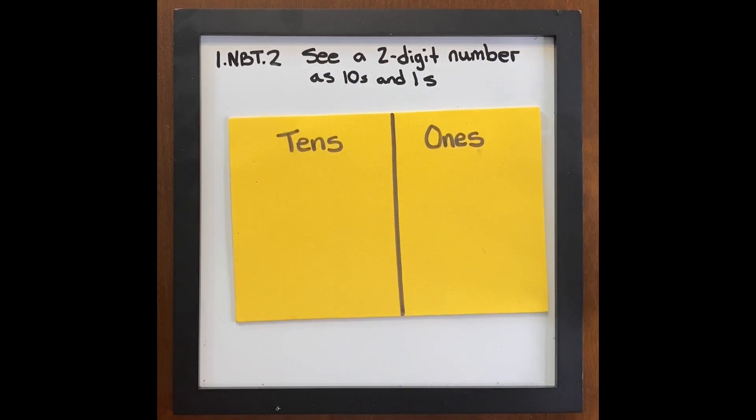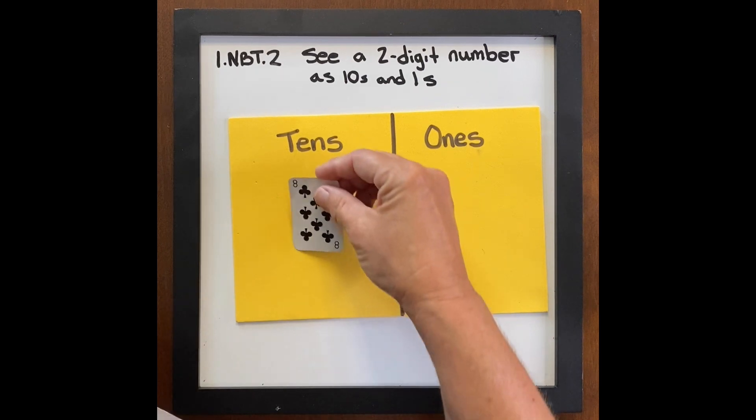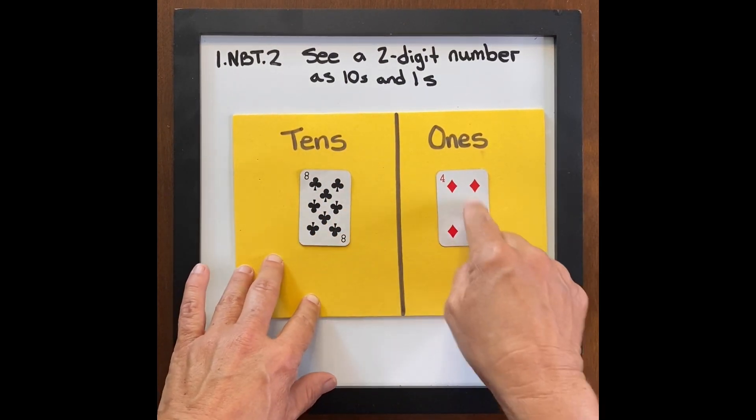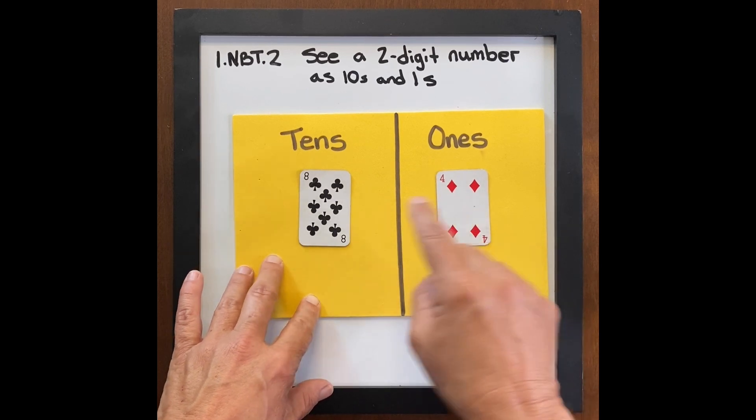So the whole concept of this is we're just wanting students to start using a language, tens and ones. Eight tens four ones. Eighty-four.